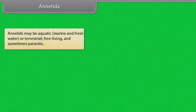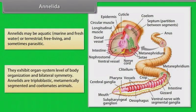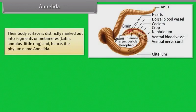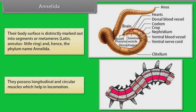Annelids may be aquatic — that is marine and freshwater — or terrestrial, free-living and sometimes parasitic. They exhibit organ system level of body organization and bilateral symmetry. Annelids are triploblastic, metamerically segmented and coelomate animals. Their body surface is distinctly marked out into segments or metameres, which is from the Latin word meaning 'annulus' or little ring, and hence the phylum name Annelida. They possess longitudinal and circular muscles which help in locomotion.